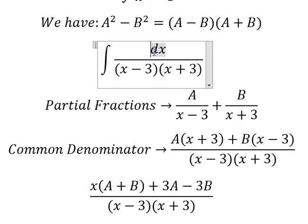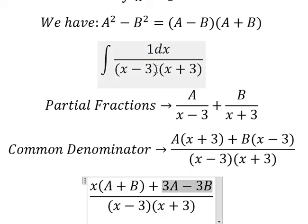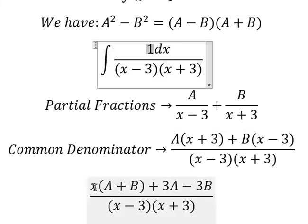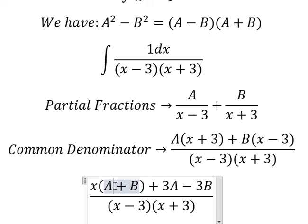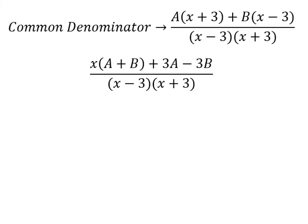So we know that coefficient of dx, that is about number one, so 3A minus 3B equals to number one. We don't have x, so A plus B equals to number zero. And now we create the system of equations.